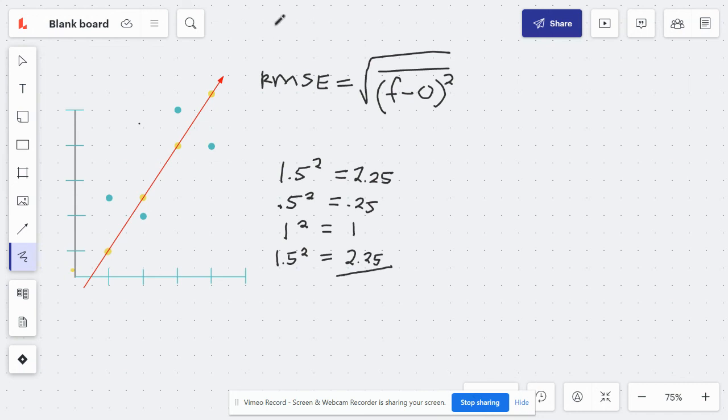So let's get the total for that, is 5.75. And then to get the mean, divided by 4, since there's 4 data points, that equals 1.4375.